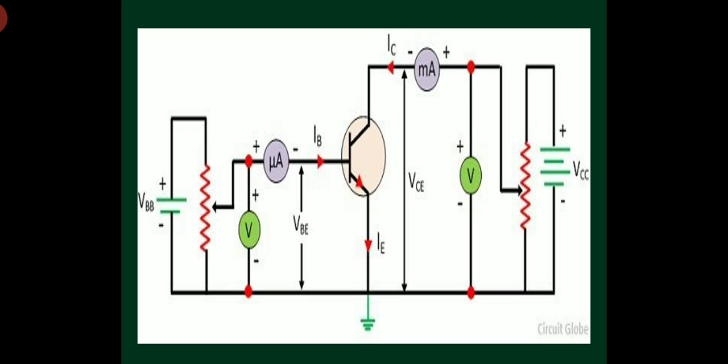To make the NPN transistor reverse biased at the output junction, I connect the positive of VCC to the collector terminal and negative to ground. A voltmeter measures voltage VCE and a milliammeter measures collector current IC. The voltmeter is connected in parallel and the ammeter is connected in series. VBB is the DC voltage source connected to the base terminal, and VCC is the voltage source connected to the collector terminal and ground.